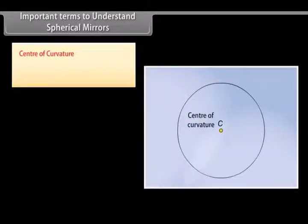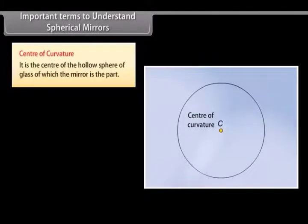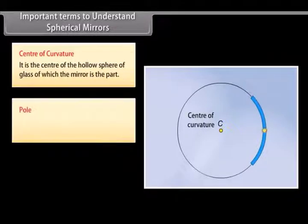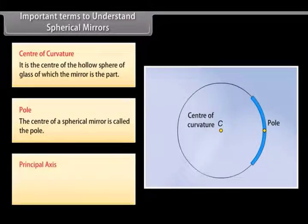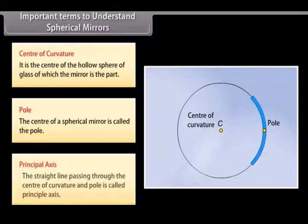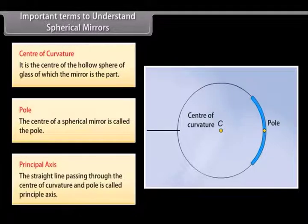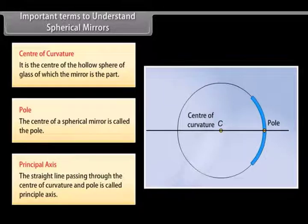Important terms to understand spherical mirrors: The center of curvature is the center of the hollow sphere of glass of which the mirror is a part. The pole is the center of a spherical mirror. The principal axis is the straight line passing through the center of curvature and the pole.